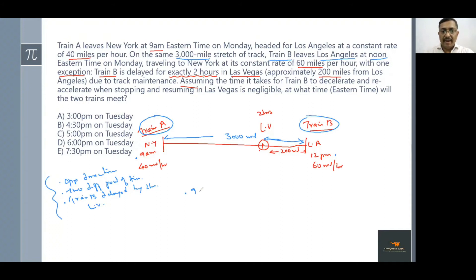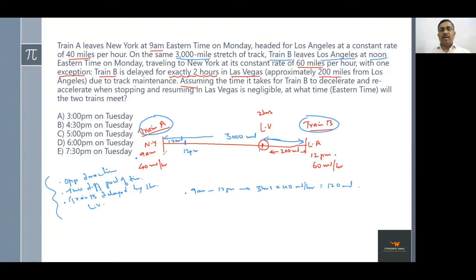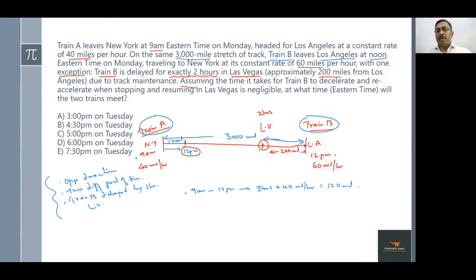From 9 AM to 12 PM — that's three hours — Train A was running alone at 40 miles per hour, covering a stretch of 120 miles. So Train A reached 120 miles from New York by 12 PM, before Train B even starts from Los Angeles.